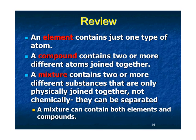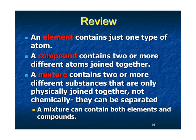Just to review: an element contains just one type of atom — like gold, hydrogen, helium, or boron. A compound contains two or more different atoms joined together chemically; I cannot separate them physically. A mixture contains two or more different substances that are only physically joined — I can separate them. A mixture can contain both elements and compounds.